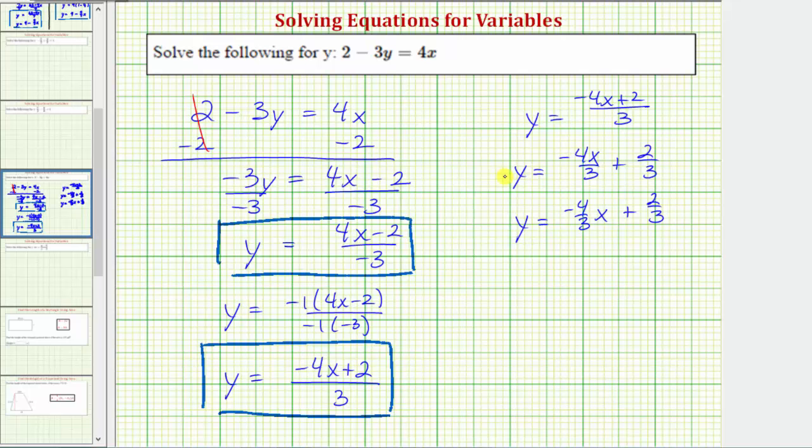So there is more than one way to express y when solving the equation for y. Now if we were to take this form and divide each term in the numerator by negative 3, we would also get y equals negative four-thirds x plus two-thirds. You may want to take a moment and try that just to verify. You would get the same results. I hope you found this helpful.